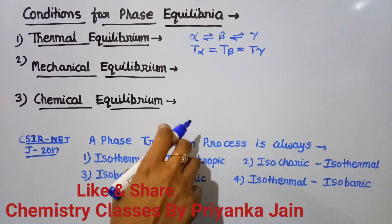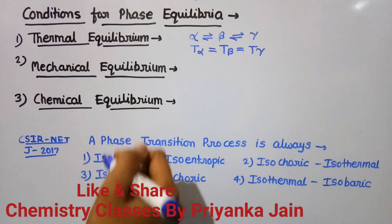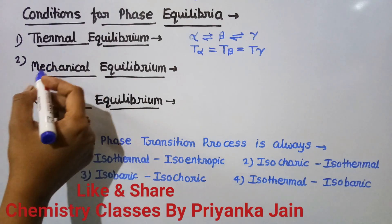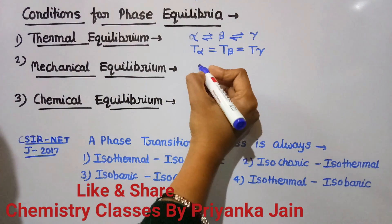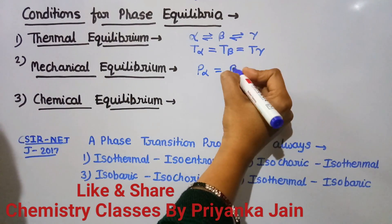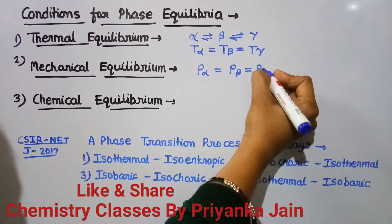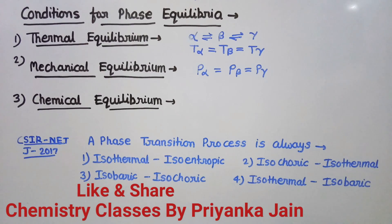The second criterion is mechanical equilibrium: the pressure of all phases must be the same — P_α = P_β = P_γ. If the pressures are not equal, one phase will expand at the expense of another.